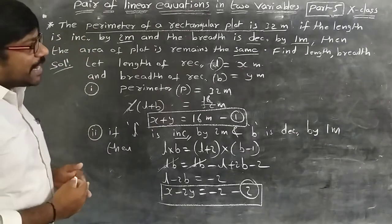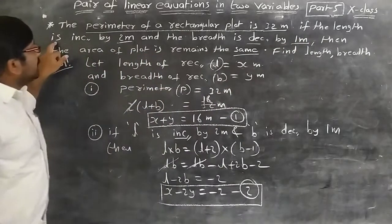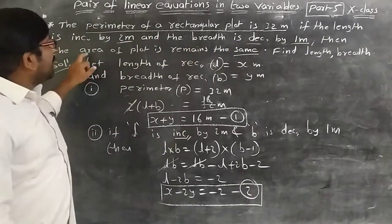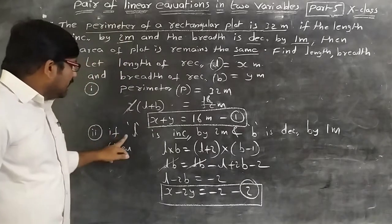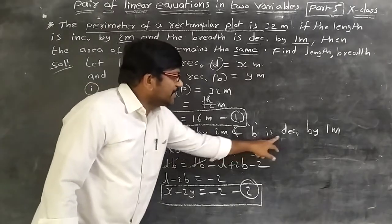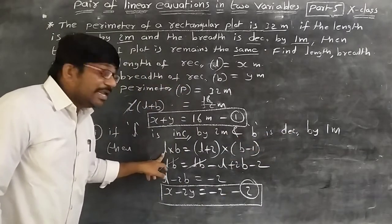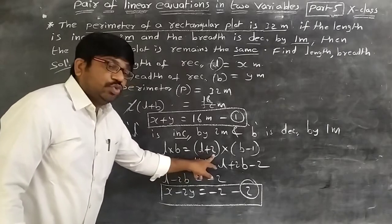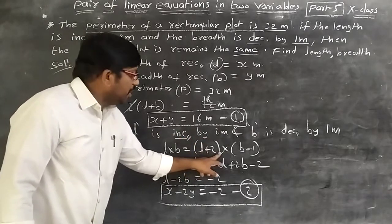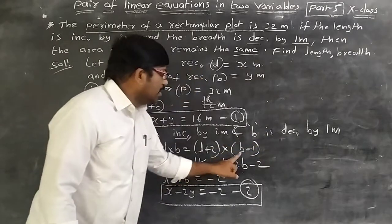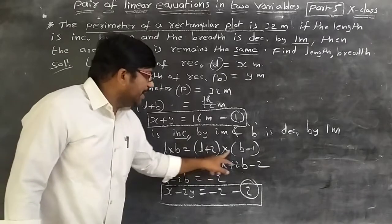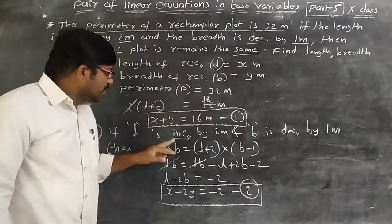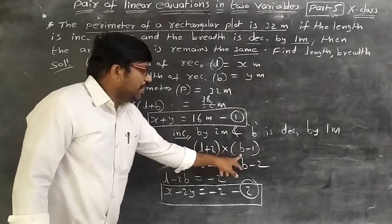Now the second condition: if the length is increased by 2 meters and the breadth is decreased by 1 meter, then the area remains the same. So, length of new rectangle is L + 2, and breadth of new rectangle is B − 1. The area equals L × B, so L × B = (L + 2)(B − 1).